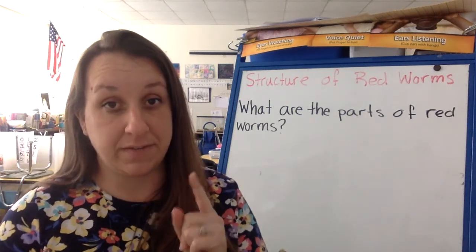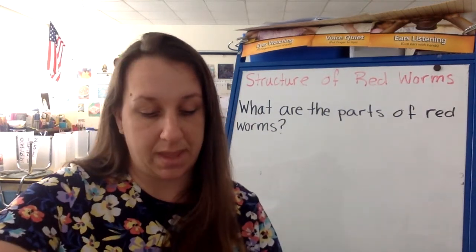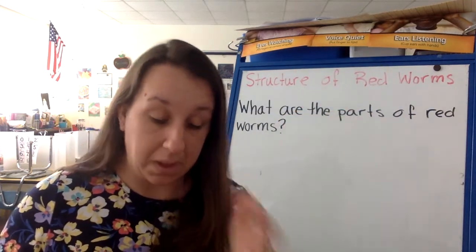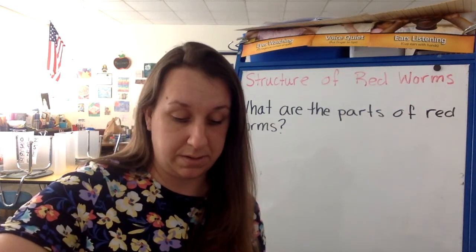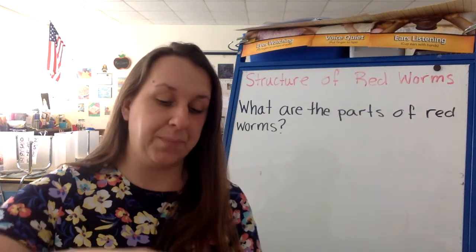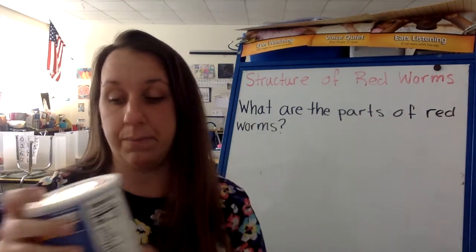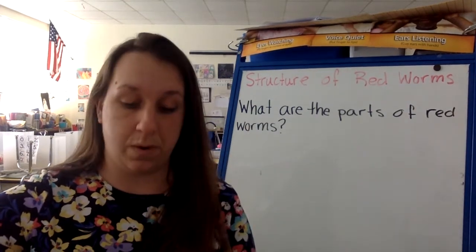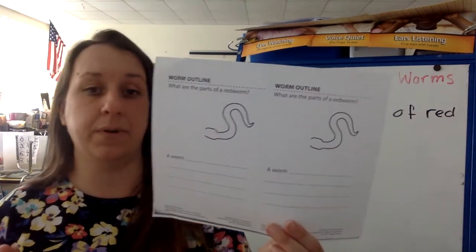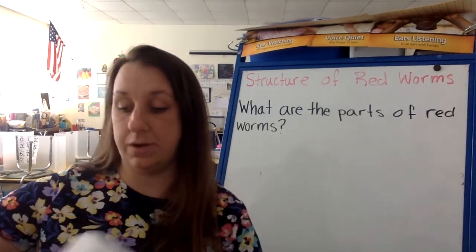So what you're going to need for today's investigation: you're going to need a little cup that has a little bit of water in it. You're also going to need a plate — a little paper plate or styrofoam plate, something like that — your worms, and the little baggie of oats that I put into your worm bag. You are also going to need this paper, the worm outline — 'What are the parts of a red worm?' — and you're going to need something to write with.